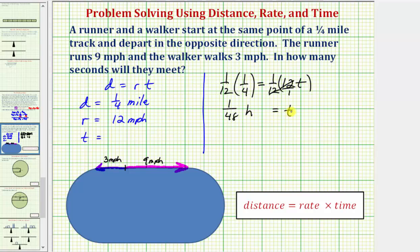So this is how long it would take for the two to meet on this track. But again, they want this time in seconds, not in hours. So let's work on converting one forty-eighth of an hour to seconds.